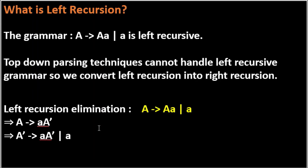These are the steps to remove left recursion. For the grammar A → Aa | a, we eliminate the left recursion to get: A → aA′ and A′ → aA′ | ε.